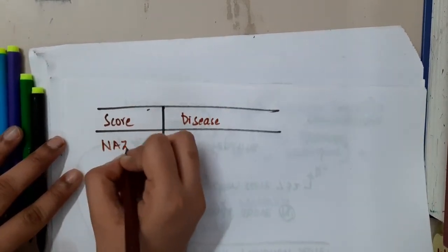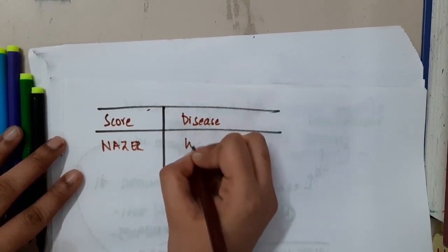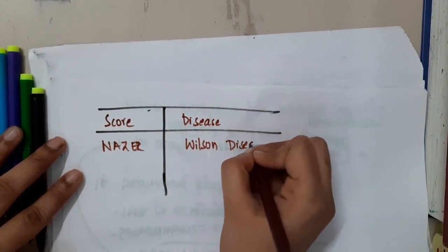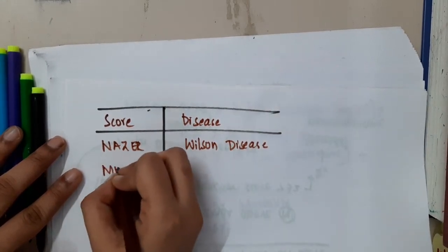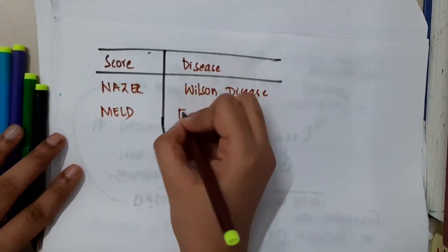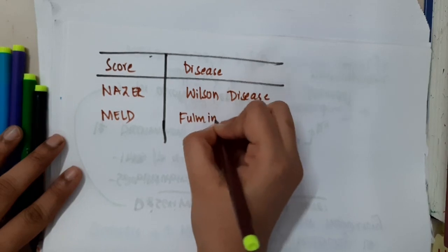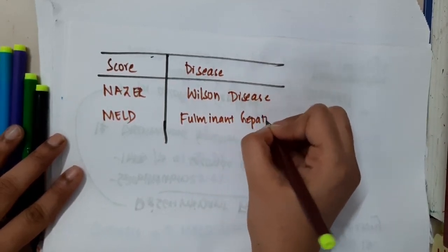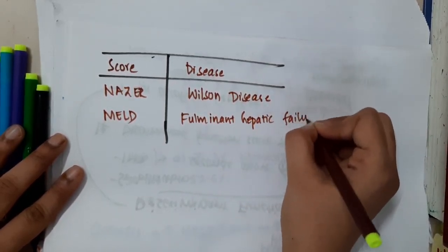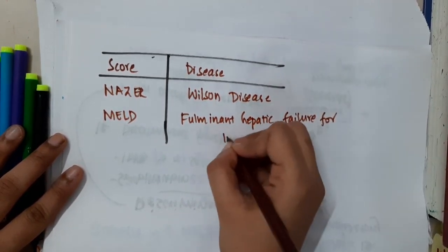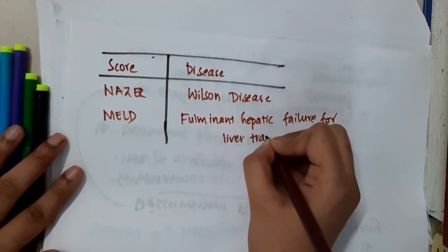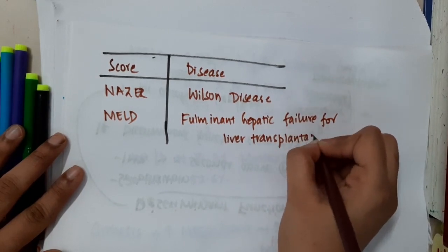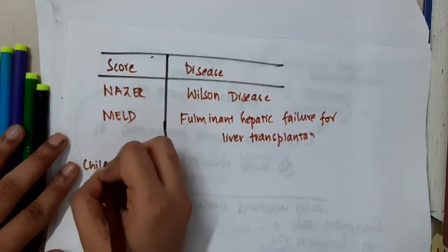Nazer score is for Wilson's disease. Dermal score is for pulmonary hepatic failure. Meld score is for pulmonary hepatic failure and for liver transplantation. Then we have Child-Pugh score.